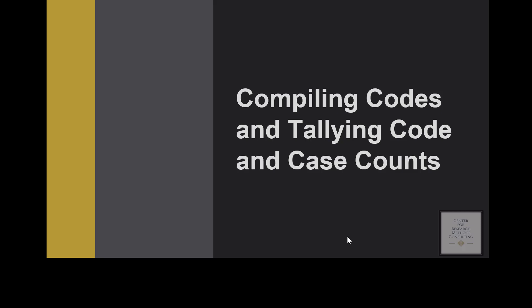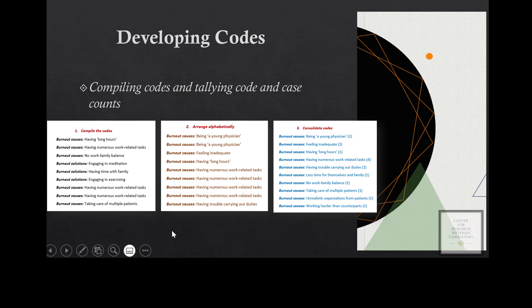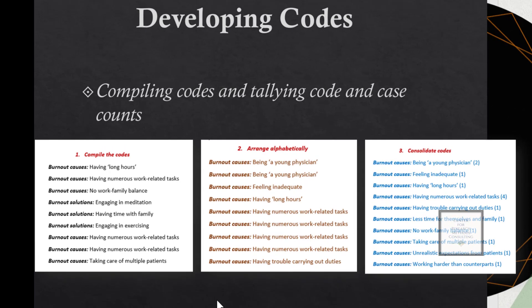The next step is to compile the code and then tell the code count. We may not be able to tell the case count because it will take a long time. Using software would make it easy to get both. For this demonstration we are going to limit ourselves to the code count. There are three main actions: first, compile the code; second, arrange the code in alphabetical order; and third, consolidate the code.